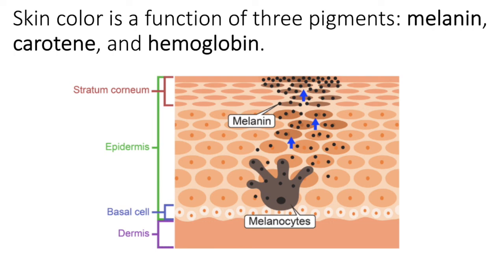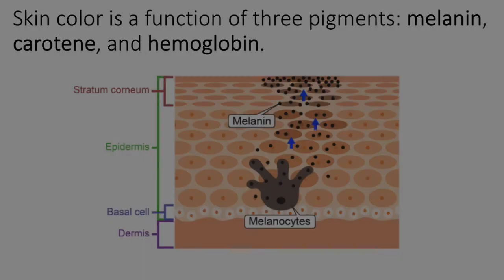All skin colors are a function of these different shades of browns and blacks, yellows to oranges, plus red. And it provides this huge spectrum of skin colors that we see in our world.